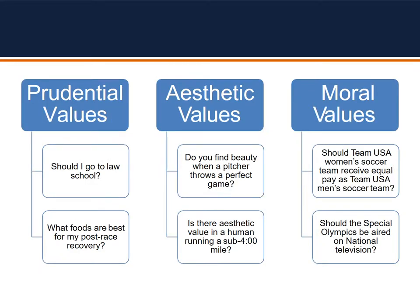Let's sum up these three values that help us address normative judgments. Recall that prudential values are concerned with the value we place on our own well-being — should I go to law school, or what foods are best for my post-race recovery? Our second value is aesthetic value, rooted in the way we view things: do you find beauty when a pitcher throws a perfect game? Finally, where the rubber meets the road is the third value, moral values. This considers our relationships and interactions with others — for example, should Team USA women's soccer team receive equal pay as Team USA's men's team? Should the Special Olympics be aired on national television? All in all, these three values help us address those normative issues and our normative judgments.